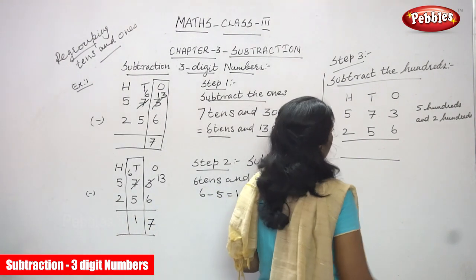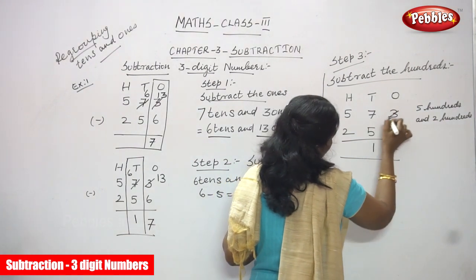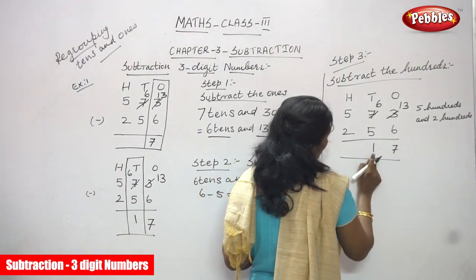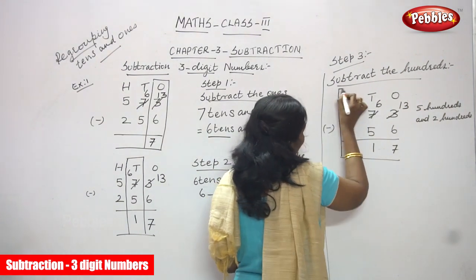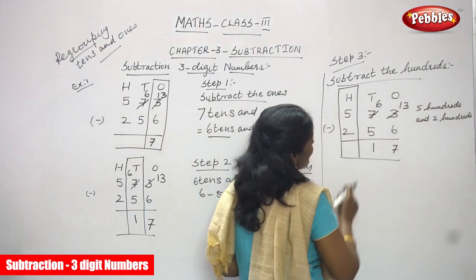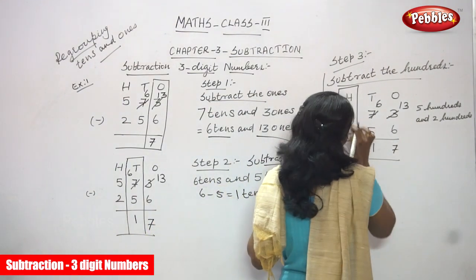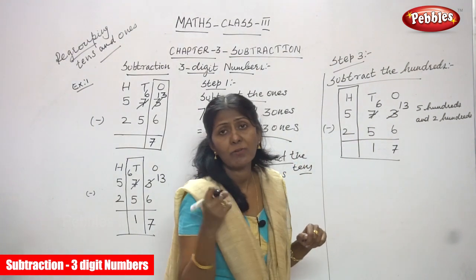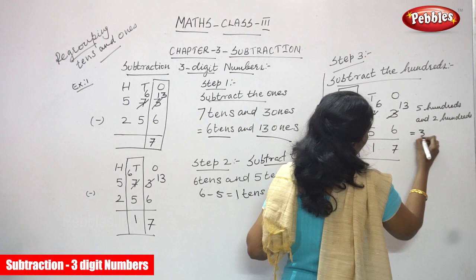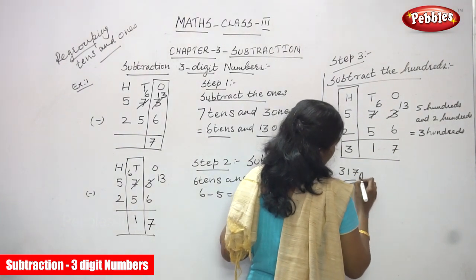Now I am going to move on to step 3: subtract the 100s. I have already written 7 and 1 — that is 7 ones and 1 ten. Now focusing on the 100s place. What are the numbers? 5 hundreds and 2 hundreds. That means 5 minus 2: backward counting starting from 2 — 3, 4, 5 — the answer is 3. So 3 hundreds. The answer is 3-1-7. This is the right answer for the question.